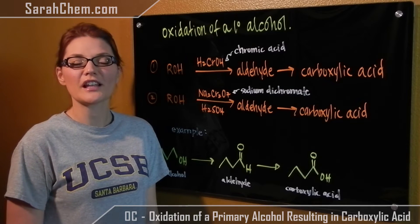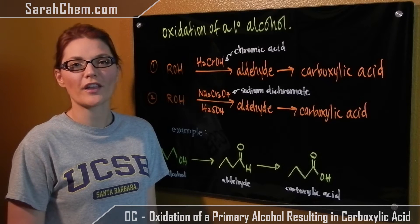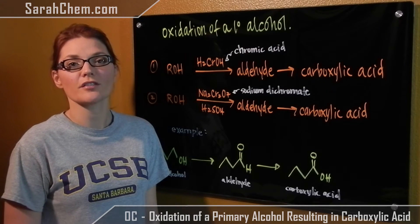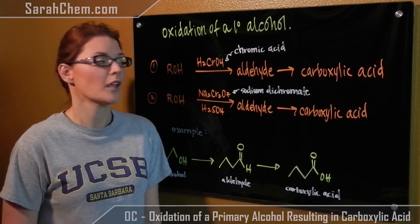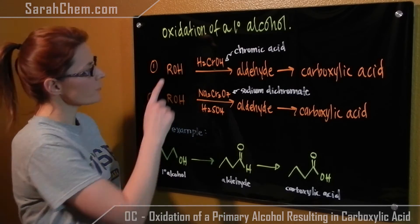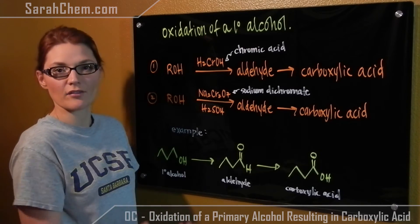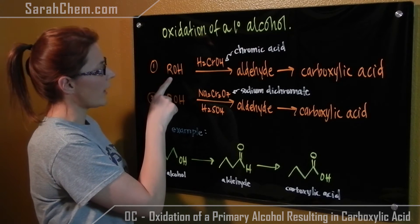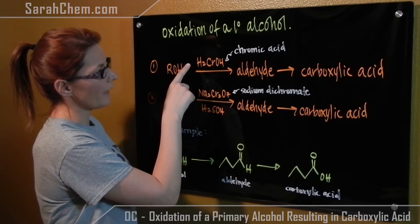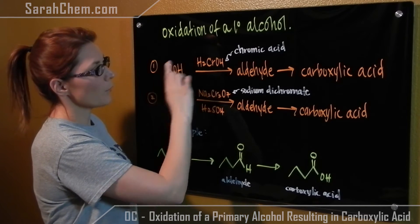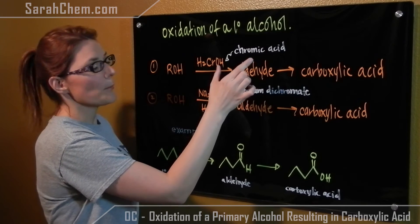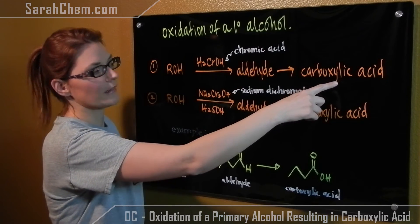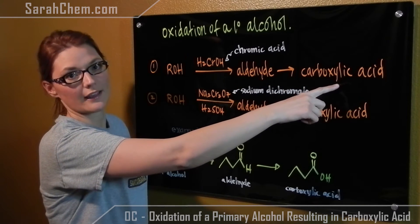Hi everyone, this is a video tutorial for the oxidation of a primary alcohol that results in the formation of a carboxylic acid. We're going to have two reagents that can make this reaction happen. First, we can have our primary alcohol react with chromic acid. It would first result in an aldehyde, but a further oxidation will happen, resulting ultimately in the carboxylic acid formation.